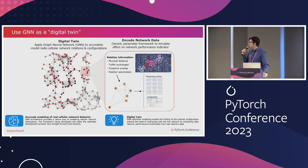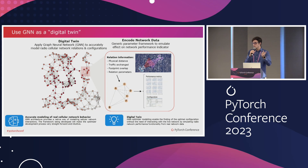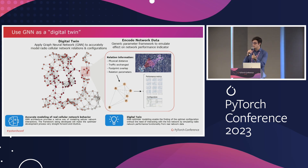We have a model that has less than 1% error. As inputs, we use the KPIs, the parameters, and for modeling the relation between different cells, we also use geographical information and the number of users moving between one cell and another.